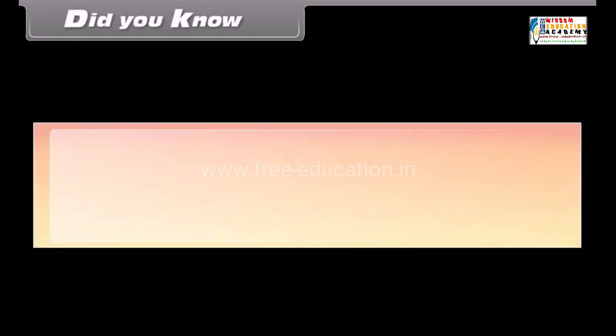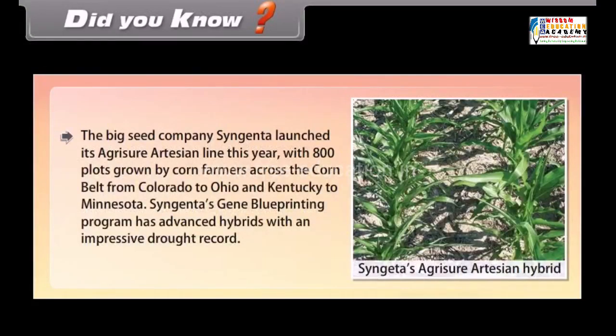Did you know? The seed company Syngenta launched its Agritio artesian line with 800 plots grown by corn farmers across the corn belt from Colorado to Ohio and Kentucky to Minnesota. Syngenta's gene blueprinting program has advanced hybrids with an impressive drought record.